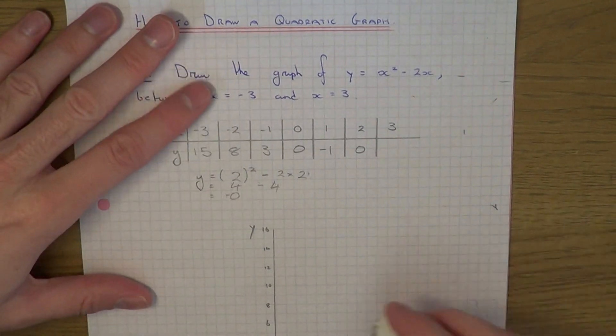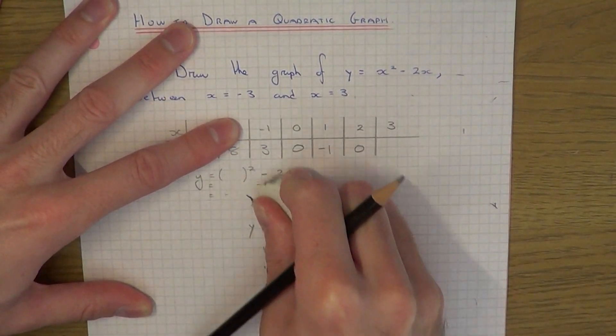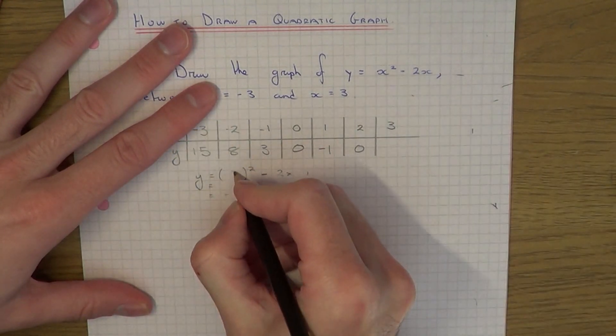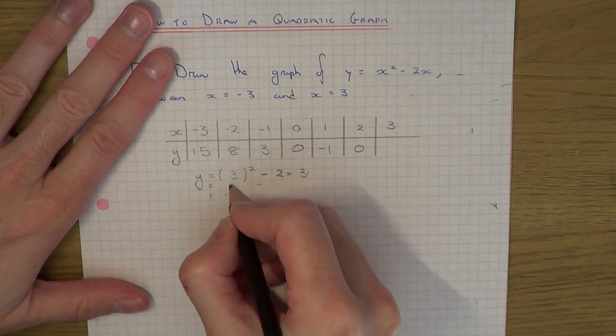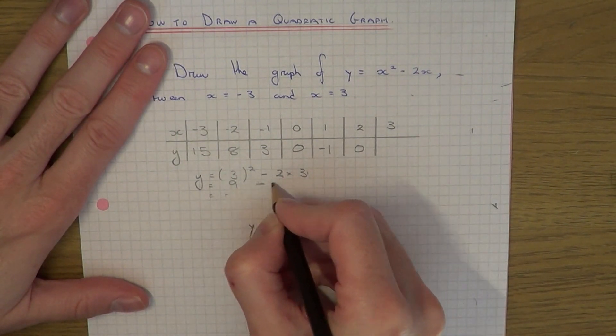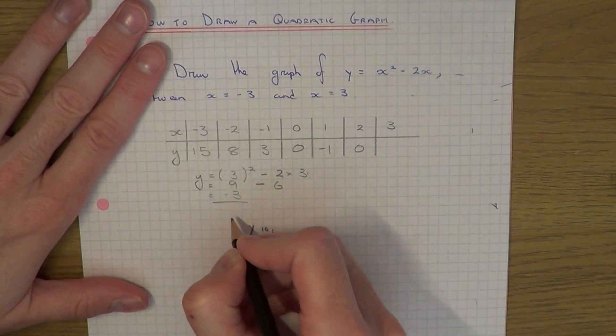Our final coordinate is x equals 3. That would be 3 squared minus 2 times 3. 3 squared is 9. Minus 2 times 3 is minus 6. And 9 take away 6 is 3.